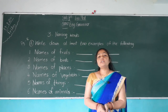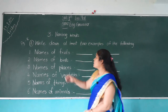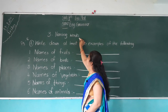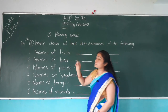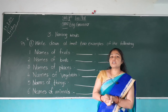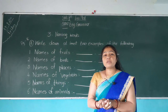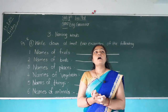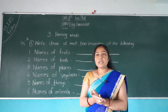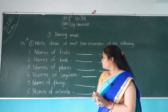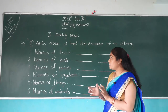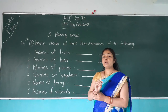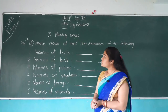Chapter number 3 — Naming Words. In the last period, we have discussed about naming words. What are naming words? Naming words means the name of people, person, place, things, animals, vegetables — everything comes in a noun or naming words. Take out your page number 16.